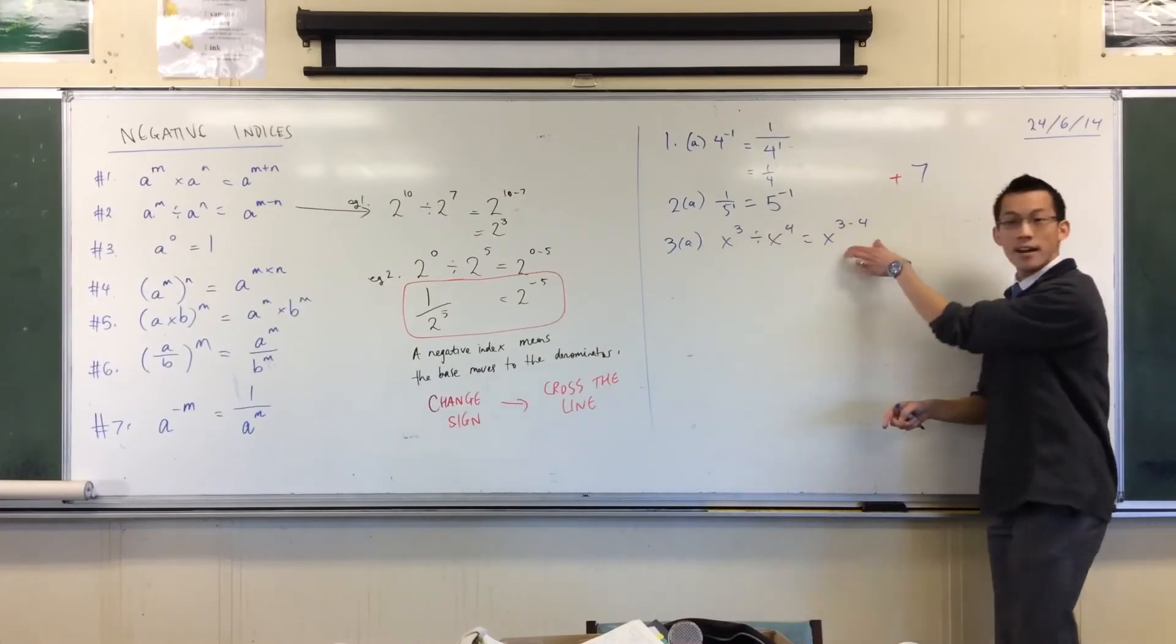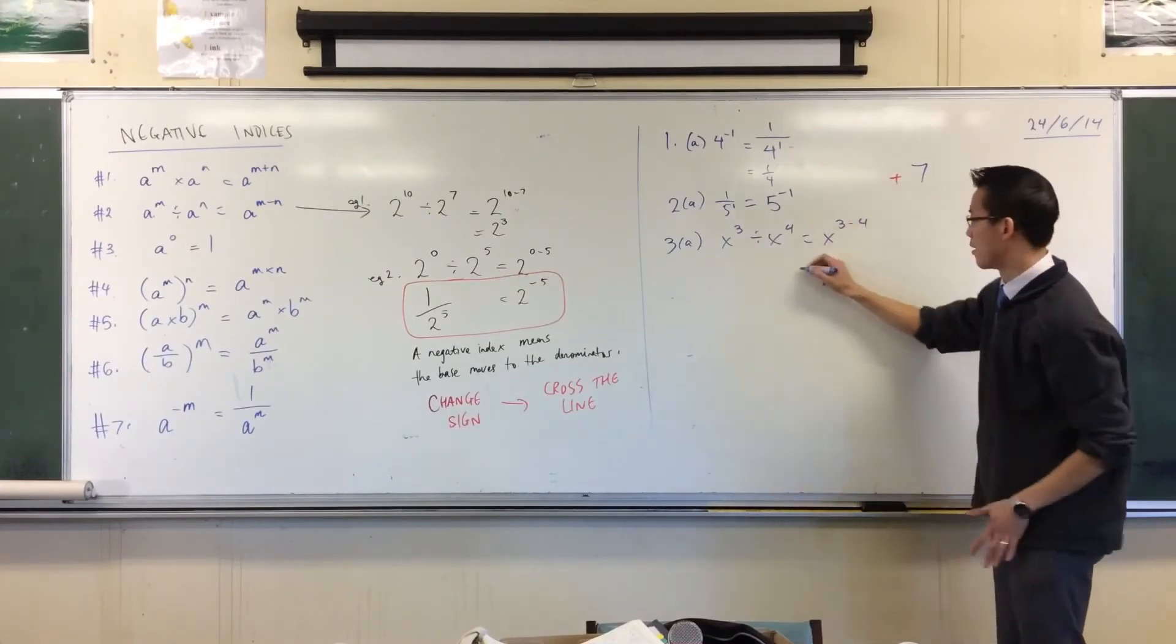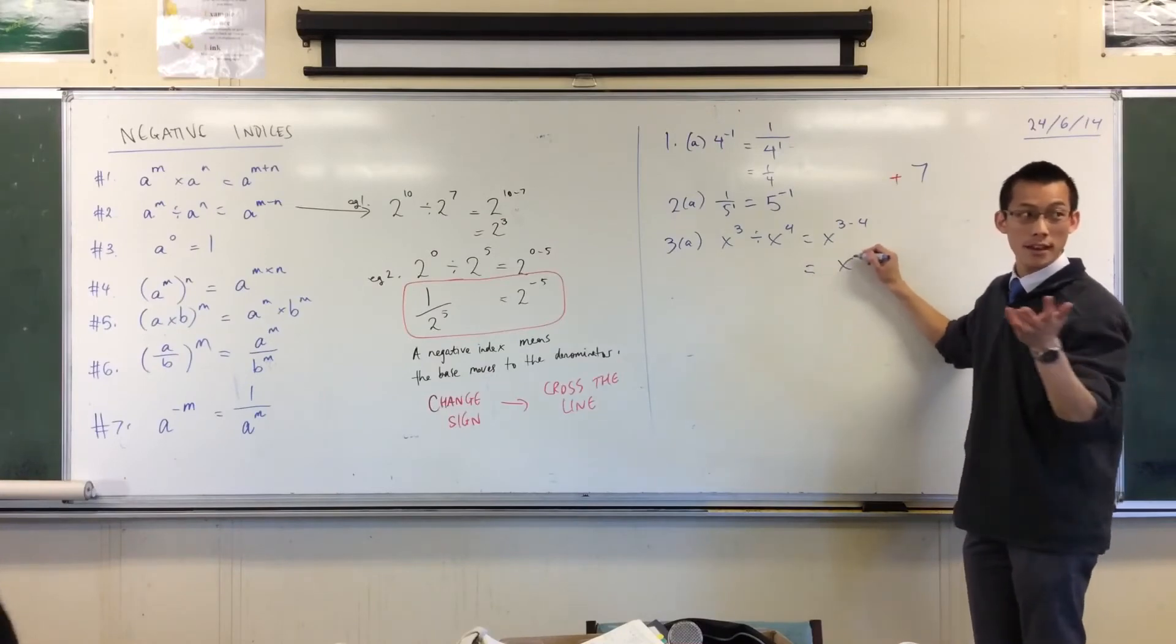This order matters. That's why the 3 and the 4 are in that order. 3 minus 4, of course, is negative 1.